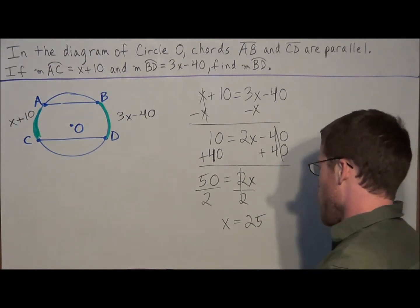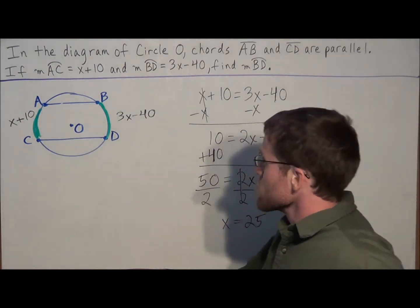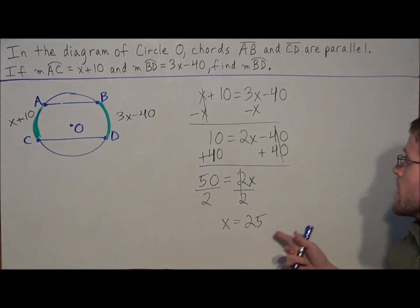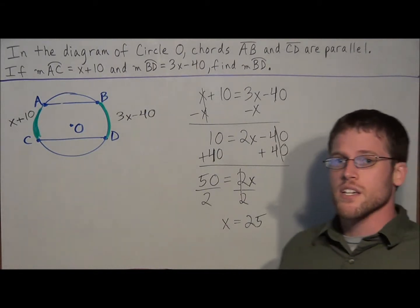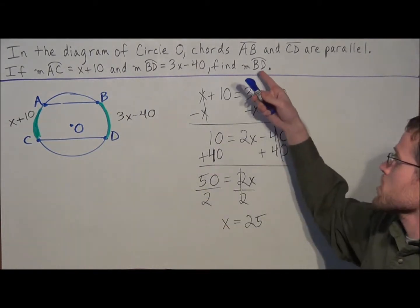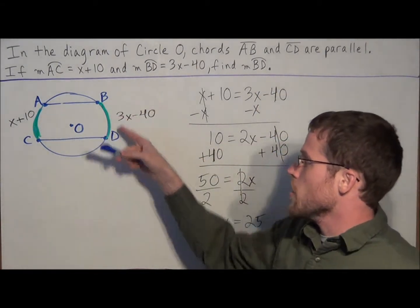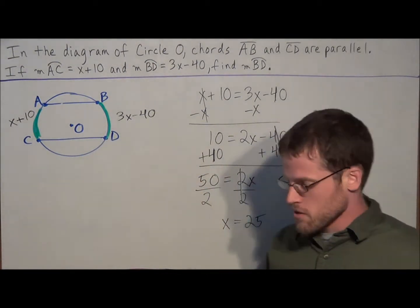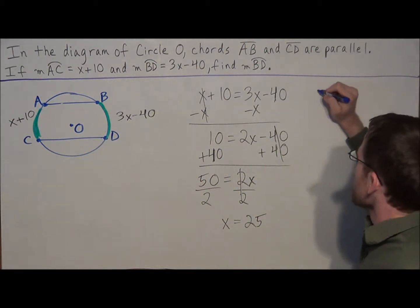But the one thing we want to be careful of is we have to make sure that we're answering the problem. So once we have x equals 25, it's tempting to say that this is our answer, but the question was asking us to find the measure of arc BD. So this x value of 25, we need to plug back into the problem.